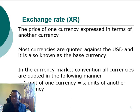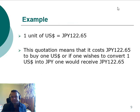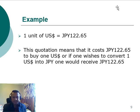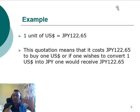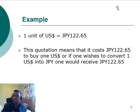In the currency market, all currencies are basically quoted against the US dollar. For example, one unit of US dollar is equivalent to 122.65 Japanese yen. This means that if someone wants to buy one US dollar in Japan, they need to spend 122.65 yen, and if they want to convert one US dollar, they will receive 122.65 yen.